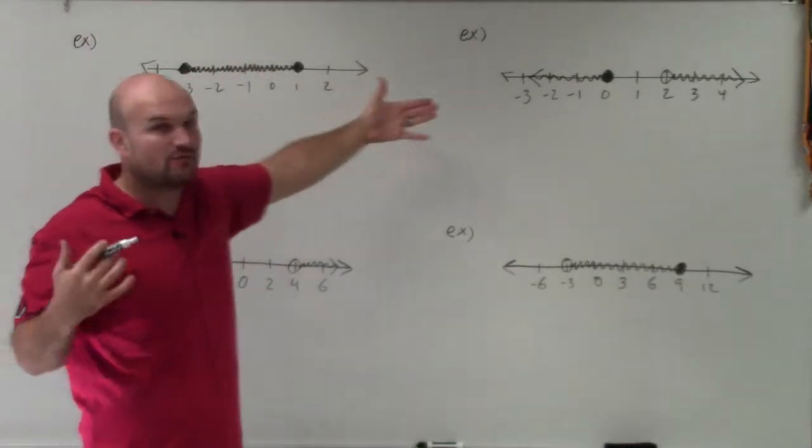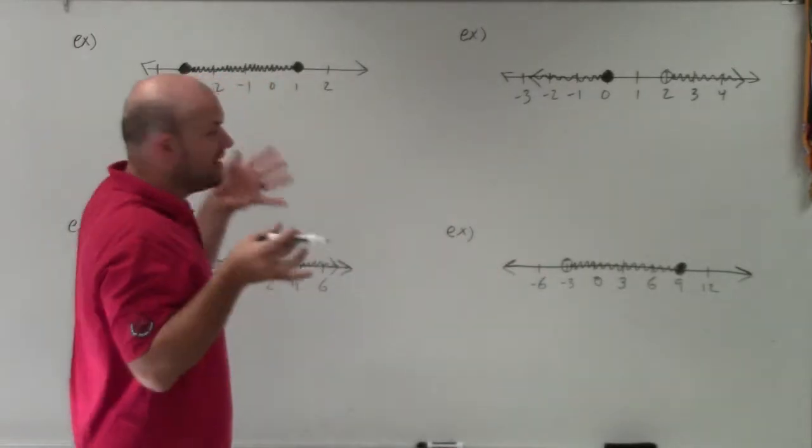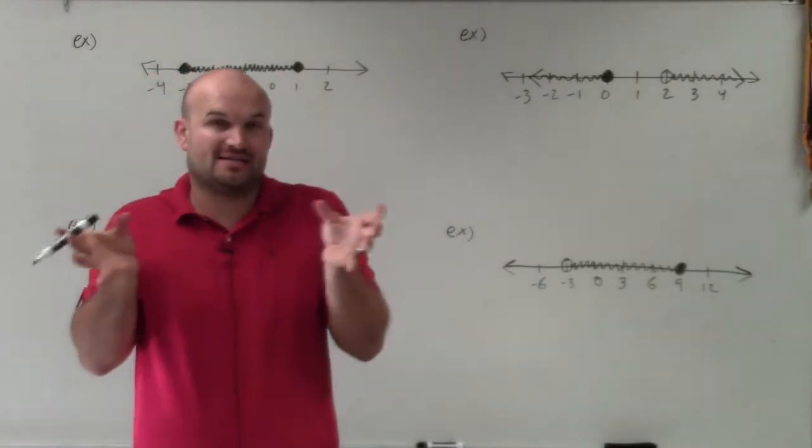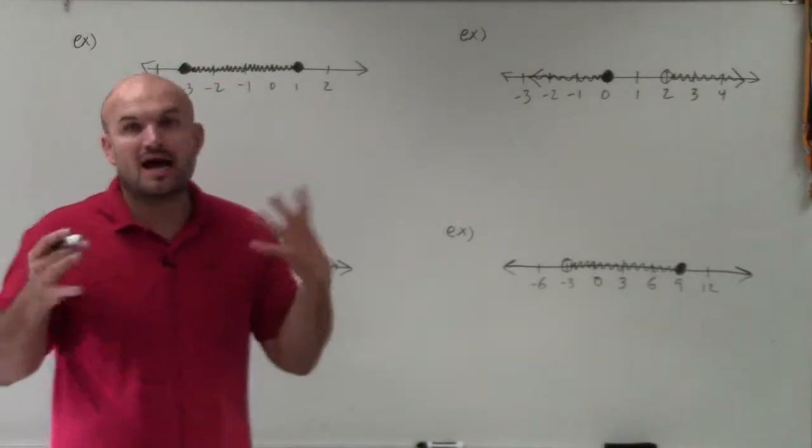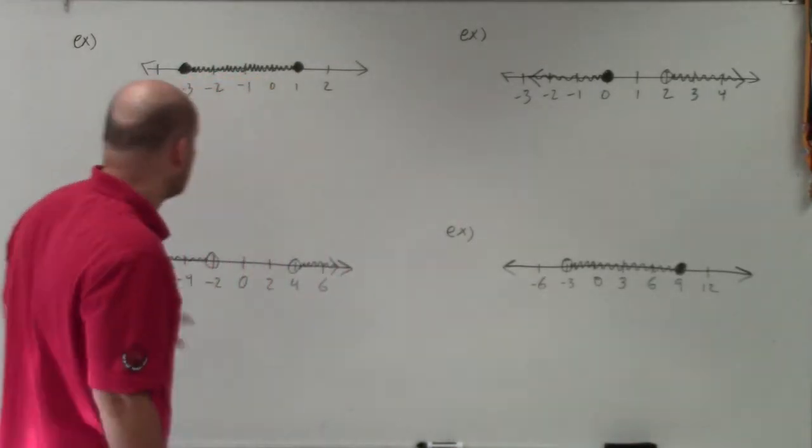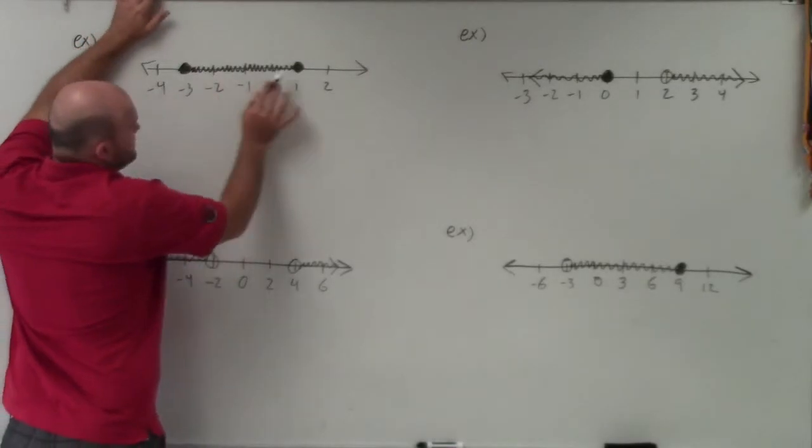So there's two different ways to write an and inequality. We can write it separately, or we can also write it as one single statement. So I'm going to first write them separately and then write them together. So first of all, we notice that our points are closed.